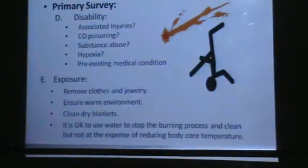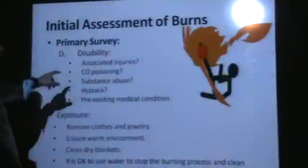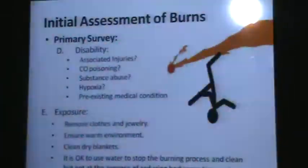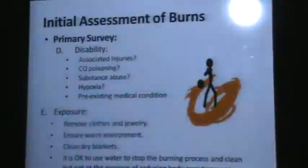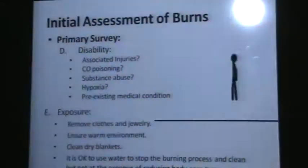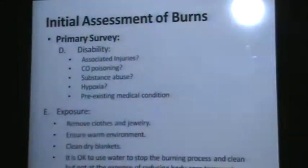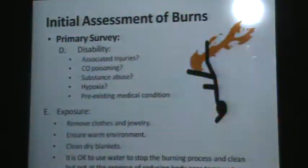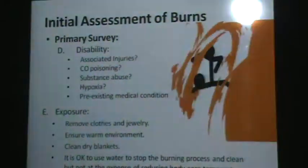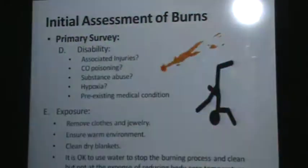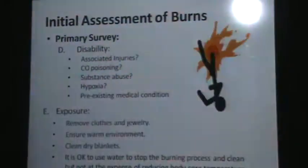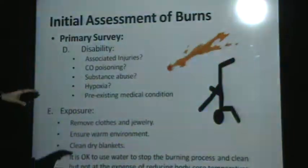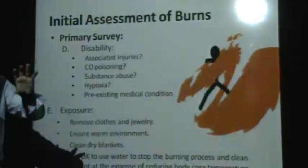D is for disability — we look at associated injuries. For example, a patient who is burned ran away, fell, and experienced trauma. They may have other kinds of injuries besides the burn itself: inability to see well or move their hands.